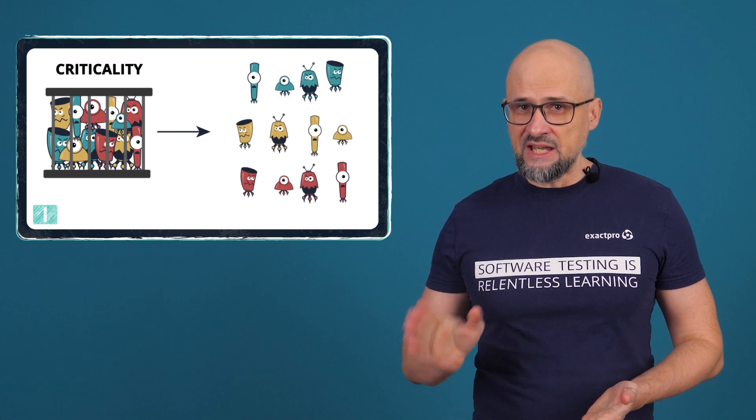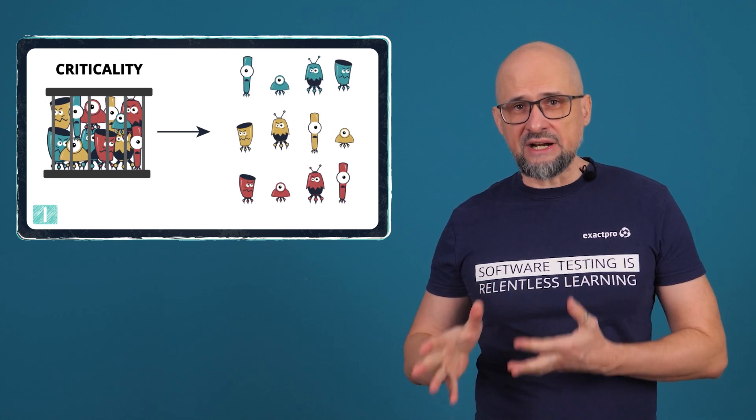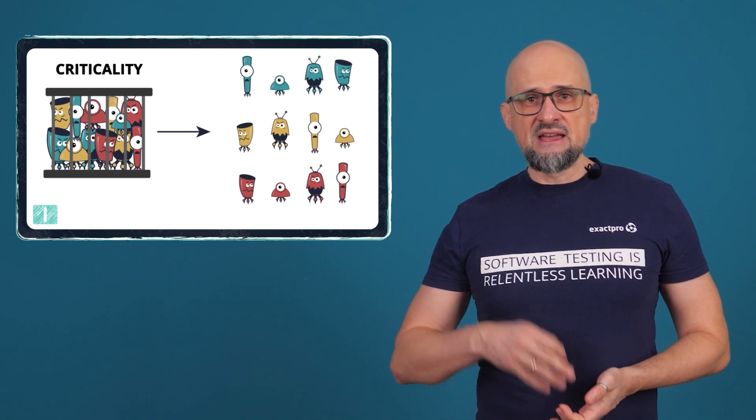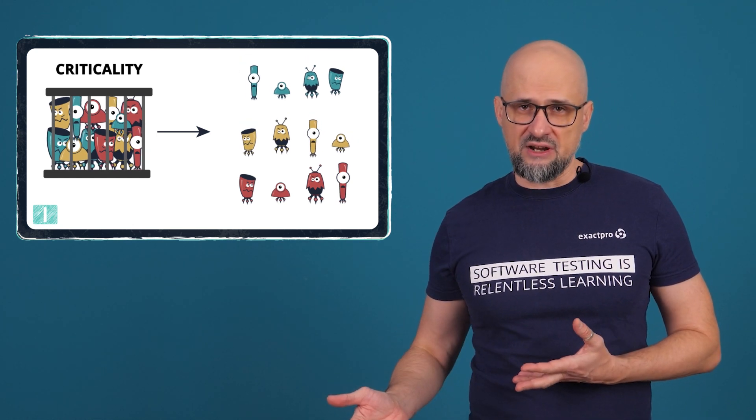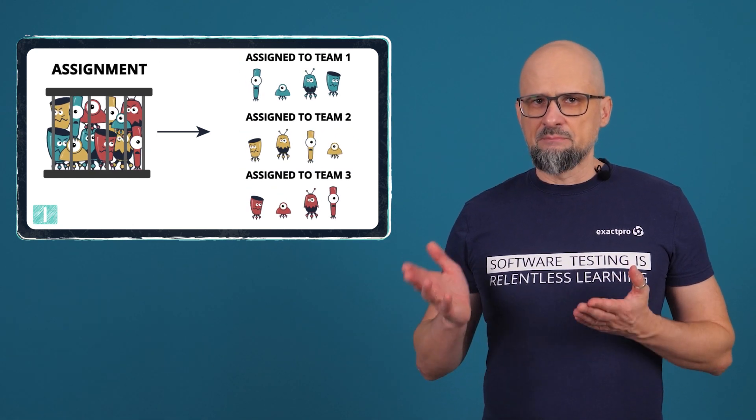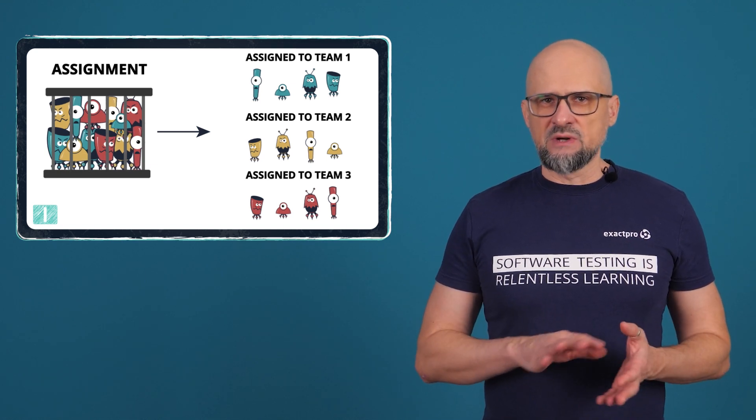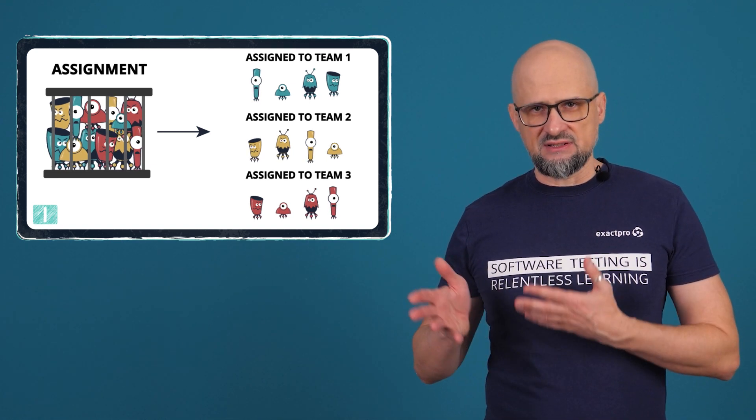Criticality. If machine learning models are trained on critical defect features, they can be used to identify those defects in real-life production scenarios. Assignment. Machine learning models can suggest which developers are best fit for particular tasks.